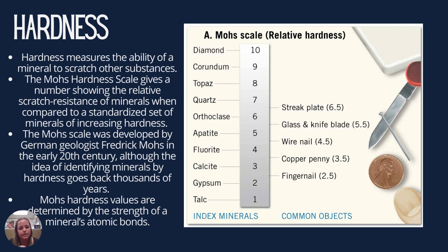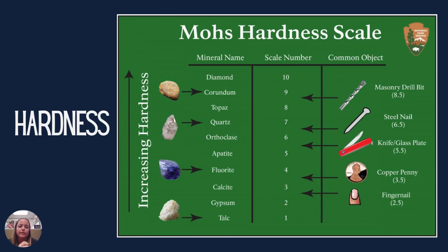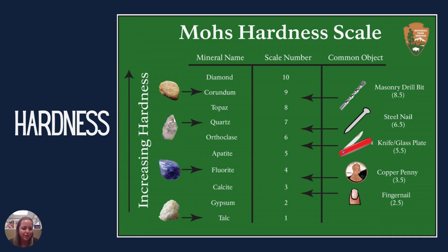This is what we call the Mohs hardness scale, coined by a German geologist named Friedrich Mohs. In my videos and in lab, we use some common objects — the nail, the penny, and your fingernail — to try to distinguish where on the hardness scale the mineral you're looking at would lie. Your fingernail is about a 2.5, a copper penny is 3.5, and the nail is a 6.5. You can also use a knife or a glass plate at the 5.5 range, and a masonry drill brick at an 8.5.